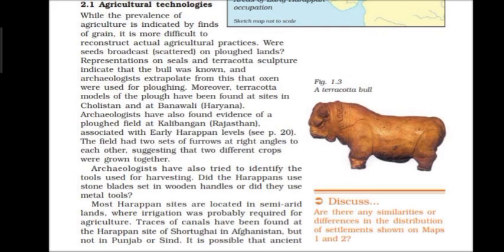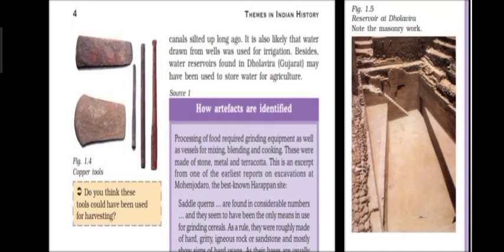Most Harappan sites are located in semi-arid land, where irrigation was probably required for agriculture. Evidence of canals has been found in present-day Afghanistan and Punjab. Water was also drawn from wells for irrigation. Water reservoirs have been found in Gujarat, suggesting stored water was also used for agriculture.